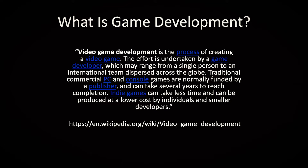Traditional commercial PC and console games are normally funded by a publisher like Activision or Sony, and can take several years to reach completion. Big AAA games will take like three years to make. Indie games can take less time and be produced at a lower cost by individuals and smaller developers. The problem with this definition is that it doesn't really explain all of the roles and talents needed to make these games — that's where we're going to step in.